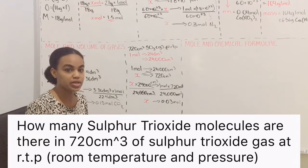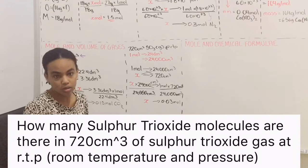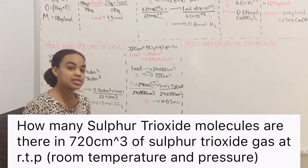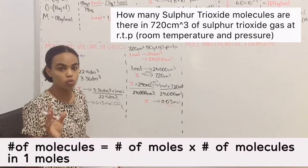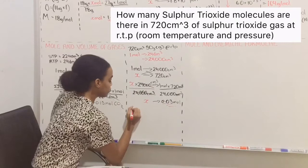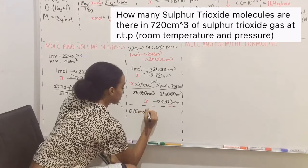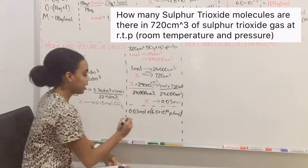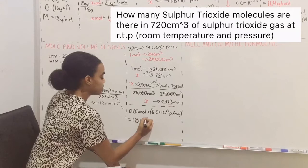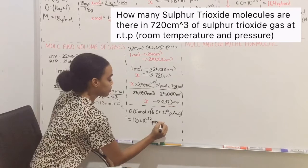They asked us to calculate the number of particles present. If we have the number of moles, we can calculate the number of particles. 1 mole equals 6.0 times 10 to the 23rd particles, so 0.03 moles times 6.0 times 10 to the 23rd particles per mole equals 1.8 times 10 to the 22nd particles of sulfur trioxide.